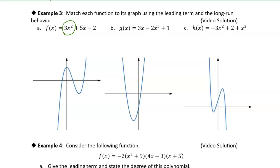Over here we have minus 2x to the fifth. You need to include the minus — subtraction is the same as adding the negative, so I can treat this as plus a negative 2x to the fifth. So our leading term is negative 2x to the fifth. Over here with h(x), the leading term is all the way over at the end — that's the highest power of x. So those are the terms we need to look at to determine the long-run behavior.